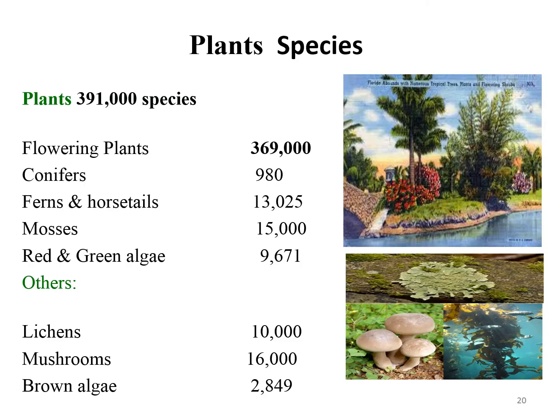There are about 391,000 species of vascular plants currently known to botanists, out of which 94% are flowering plants. About 980 include conifers, more than 13,000 include ferns and horsetails, and others include mosses, red and green algae, lichens, mushrooms, and brown algae.